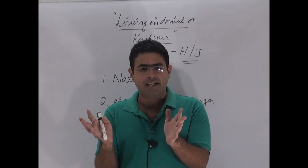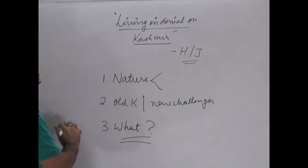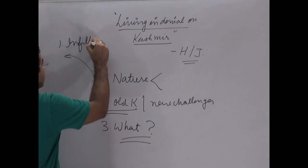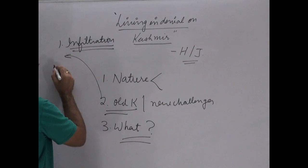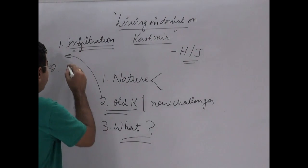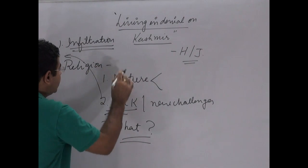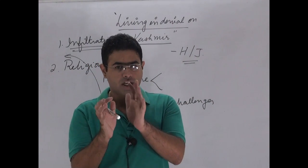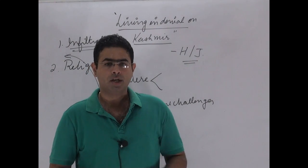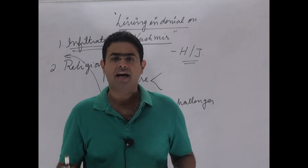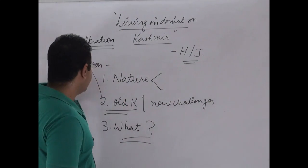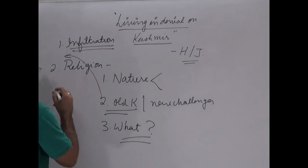Kashmir problem is not a linear problem, it is a polynomial problem. In order to understand this polynomiality, we need to understand what were the old challenges and what are the new challenges. When it comes to the old challenge, the foremost was infiltration. The second challenge was religion - the incompatibility between the Muslims and the Hindus in Kashmir. I'm talking about Kashmir, not Jammu, because Kashmir is the main area in which the problem gets intensified time and again. These two issues were the old issues plus the issue of local support for terrorism.